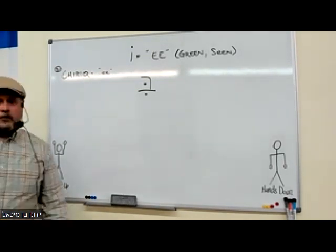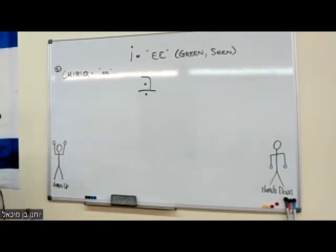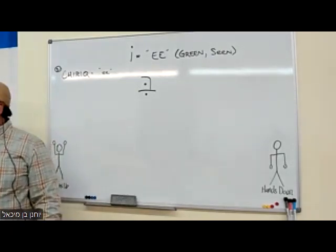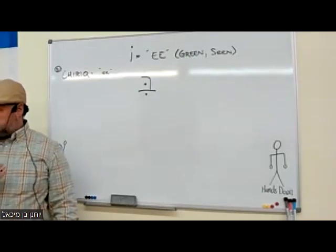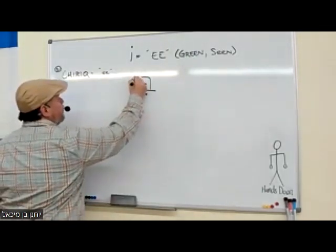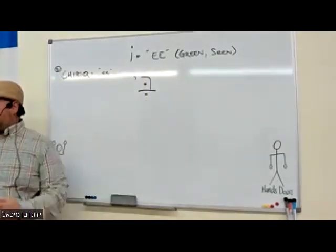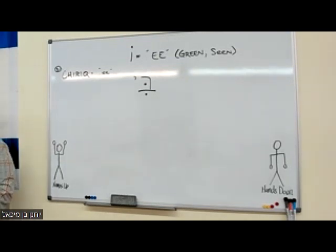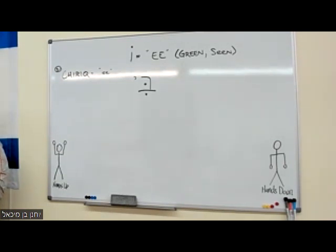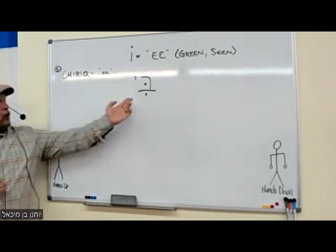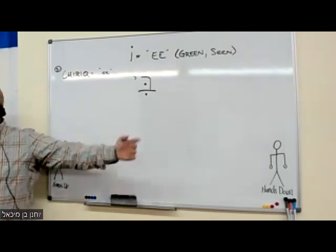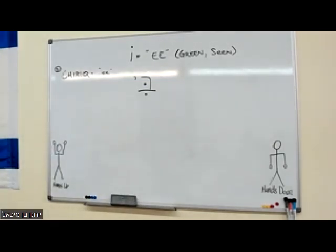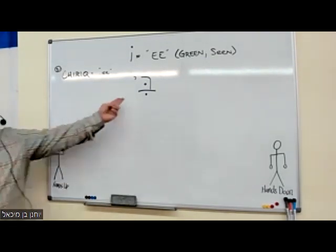Then we have the long form: hiriq yod. We add a yod after the letter to get the long 'ee' sound. So with bet plus hiriq yod that reads 'bee' — like what buzzes around, makes honey, and can sting you. The long form is held longer than the short hiriq.